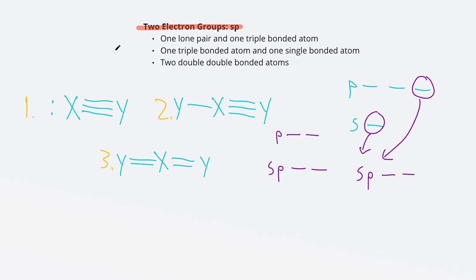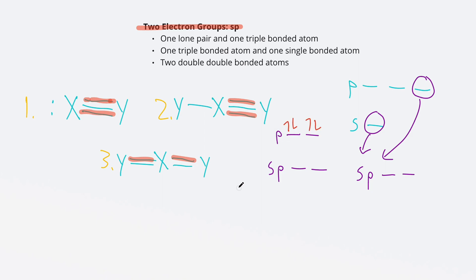The electrons in the P subshell are always the ones participating in the double or triple bonds. For a triple bond, two of those three bonds go into the P subshell. For two double bonds, one bond from each double bond goes into the P subshell — it can never be both bonds from the same double bond. Those red-highlighted electrons are all pi bonds. The remaining electrons — lone pairs, the one bond from a triple bond not highlighted red, and single bonds — go into the sp subshell and are sigma bonds.